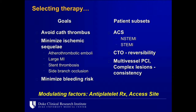Which agent should we use? That depends on our goals in the cath lab. Our primary goal is a good clinical outcome, which means avoiding catheter thrombus — equipment inside the patient must not develop thrombus, as that can lead to thrombotic emboli. We want to minimize ischemic sequelae: atherothrombotic emboli, large periprocedural MIs, stent thrombosis, and side branch occlusions. And we want to minimize bleeding risk.